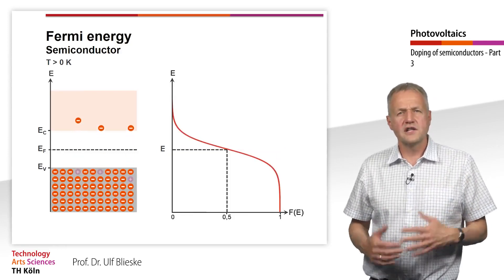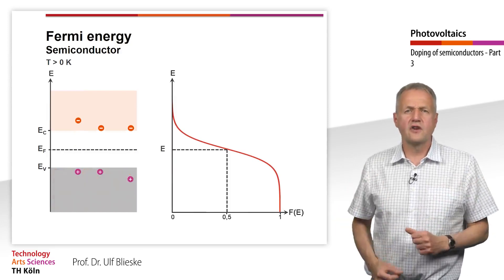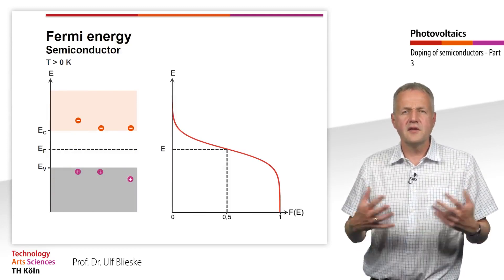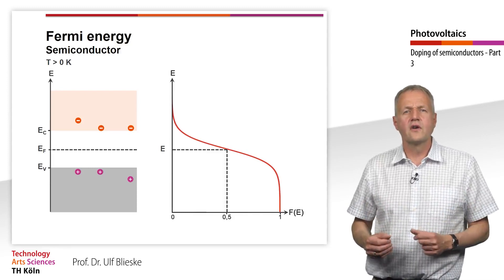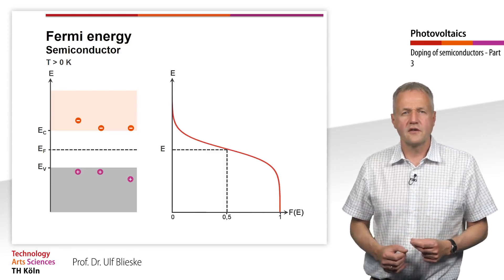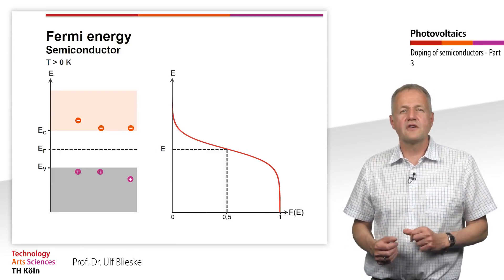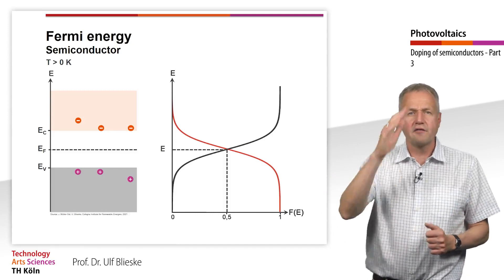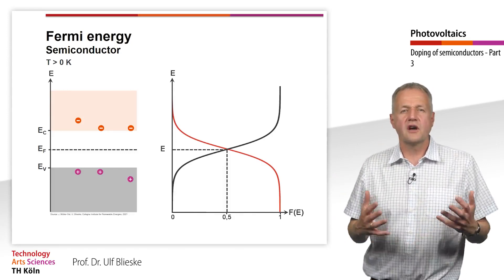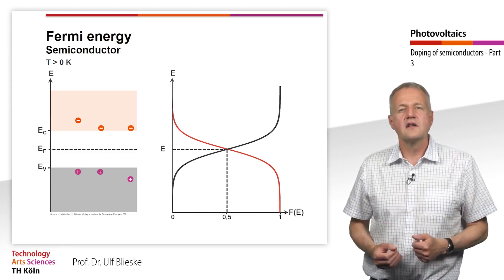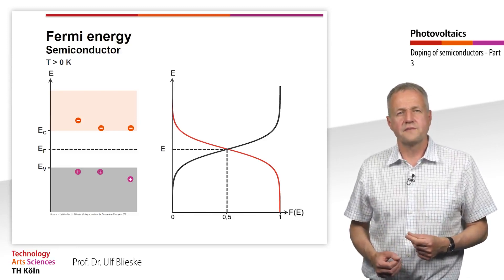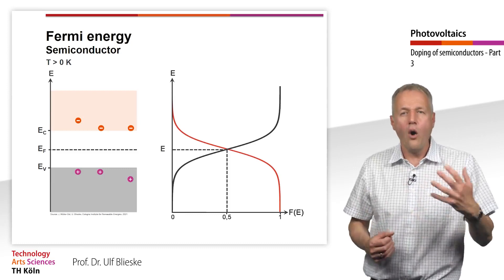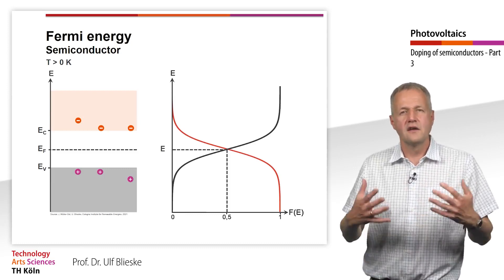At increasing temperature, there are only a few electrons in the conduction band and correspondingly few holes in the valence band. The missing electrons in the valence band — the holes — are shown with purple circles. For better representation, the other electrons in the valence band have now been removed. The red curve again describes the Fermi-Dirac function, meaning the probability with which an electron is encountered in the corresponding energy state. The gray curve is 1 minus the Fermi-Dirac function, meaning the probability with which a hole can be encountered in the valence band depending on the energy.